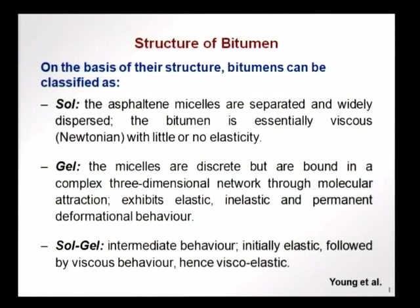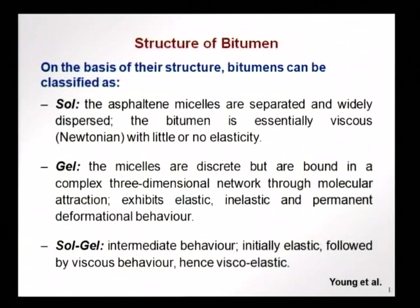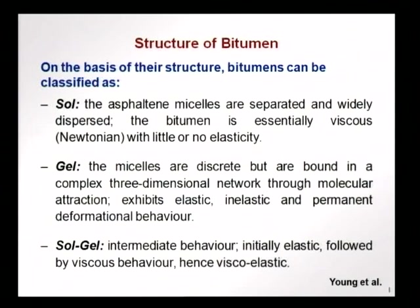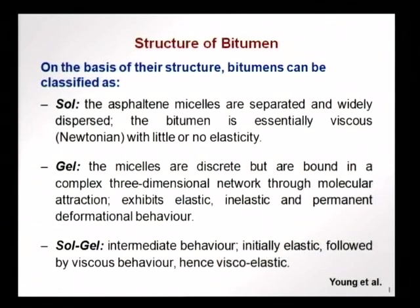In a gel, liquid is dispersed in a solid, and a sol-gel is a mix of the two. In the case of a bitumen closer to a gel, the micelles are discrete with finite shapes but bound in a complex three-dimensional network through molecular attraction. Consequently, we can have elastic, inelastic, and permanent deformational behaviour. In the case of sol-gels, there is intermediate behaviour: initially more elastic, followed by viscous behaviour, making the material viscoelastic — having properties of both elastic materials and viscous behaviour.